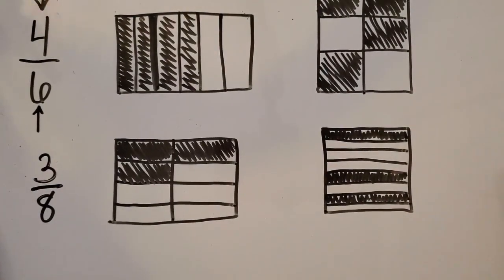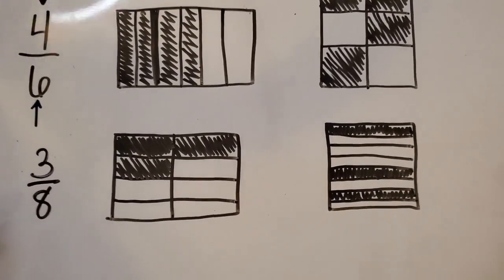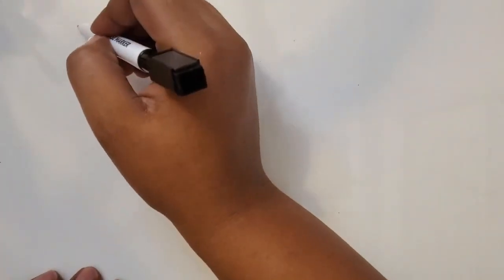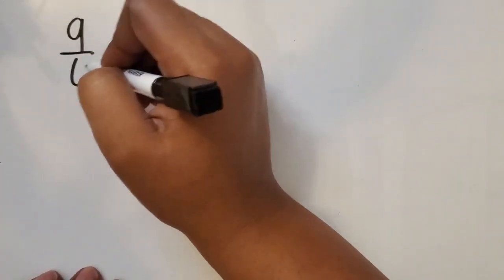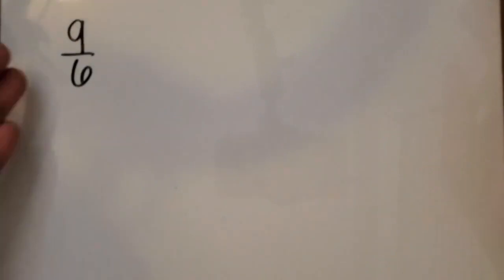Now what if we wanted to represent a fraction greater than 1, or an improper fraction, some people know it as, using a rectangular area model? So what if we had the fraction greater than 1, 9/6? And again, it's a fraction greater than 1 because the numerator is larger than the denominator, so it has a value that is greater than one whole.